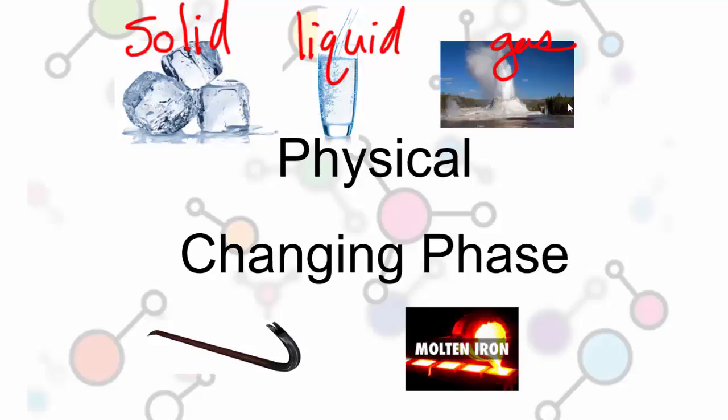I see a lot of students get the question wrong when we move it to something that's not water. If I were to talk about molten iron and solid iron, the chemical formula is still the same. It's still iron. So it doesn't matter if it changes its form, but the chemical formula doesn't change. It's a physical change.